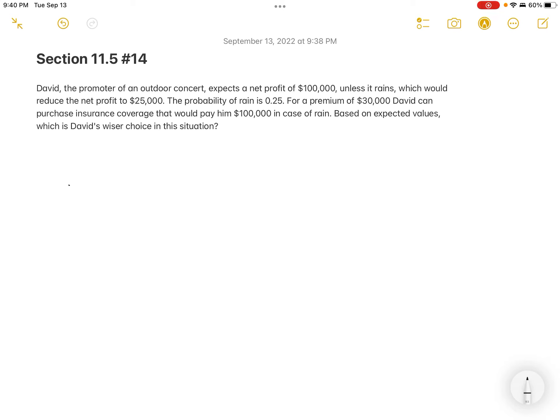So this is another one that deals with expected value because it says at the end, based on expected values, which is David's wiser choice in this situation. If we read the question, we have a promoter of an outdoor concert and he expects to gain a net profit of $100,000 unless it rains. And then if it does rain, he's going to expect a net profit of $25,000.